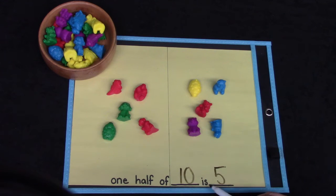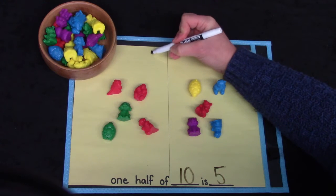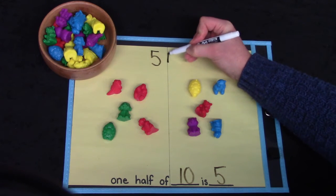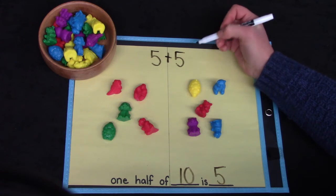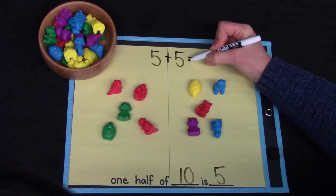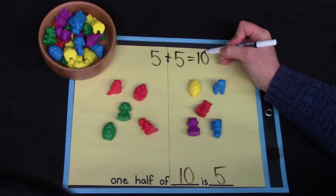One half of 10 is five. Some people remember finding one half from their doubles facts. Maybe you remember that five plus five equals 10.